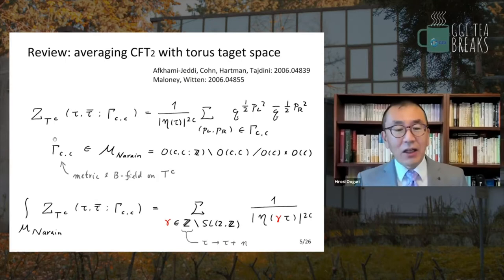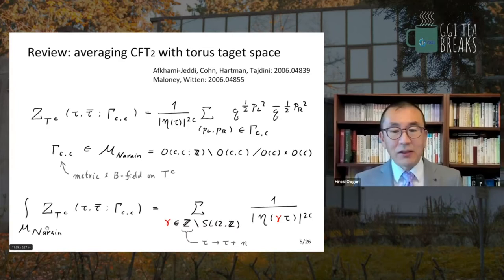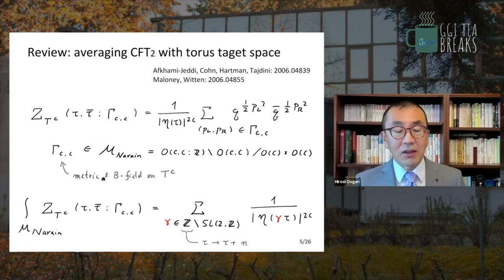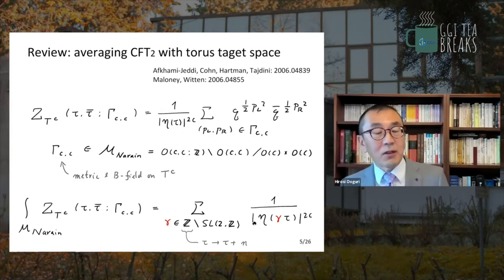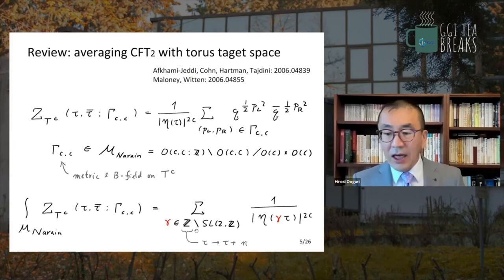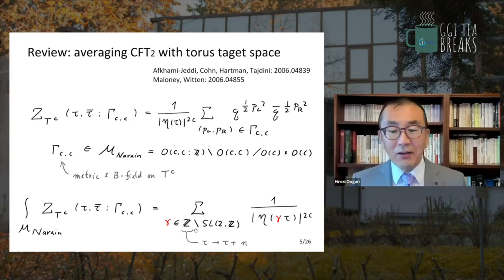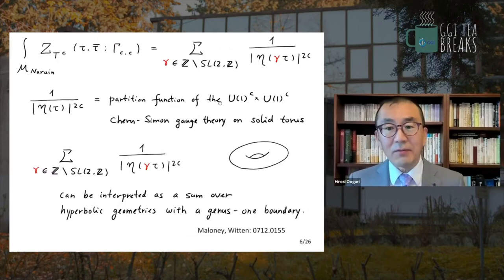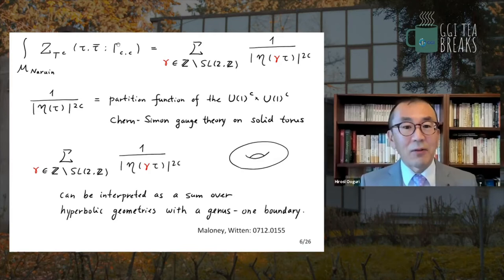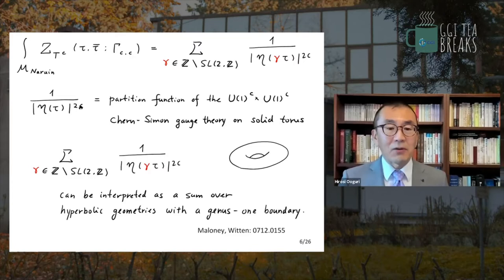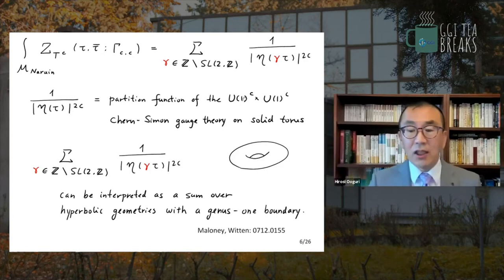They decided to average this partition function over the Narain moduli space. The measure is well-defined because you have the Zamolodchikov metric in CFT for marginal perturbations. They discovered a beautiful formula going back to Siegel: the average is given by the inverse of the Dedekind eta function summed over images of SL(2,Z)/Z. They found an interpretation of the right-hand side as a gravitational partition function. The average of Narain CFT over Narain moduli space is given by a sum over inverse Dedekind eta functions, which has an interpretation as the partition function of a Chern-Simons gauge theory with gauge group U(1)^C × U(1)^C.